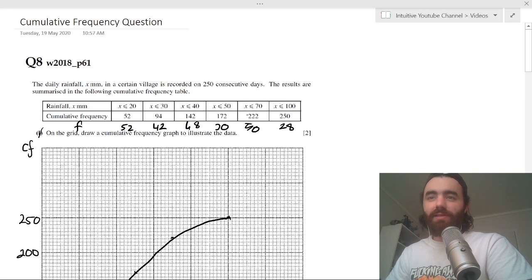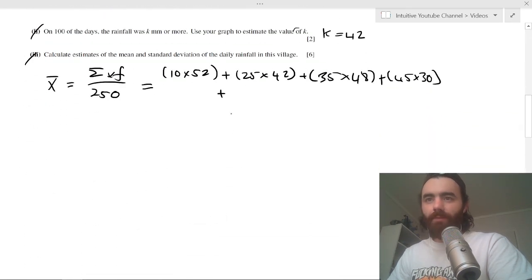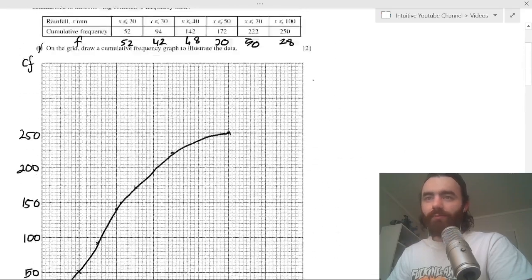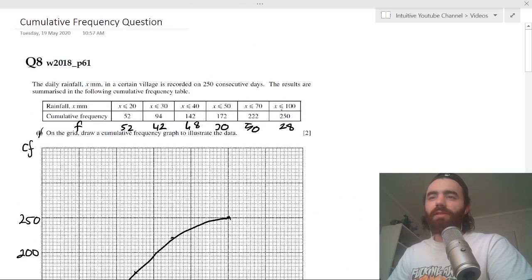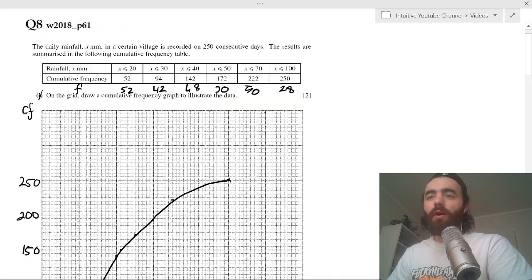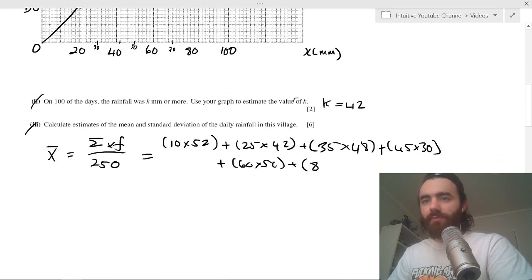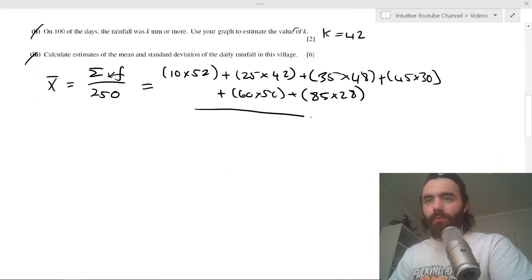Between 50 and 70 is 60 times 50, and you get the idea. Plus the final one will be between 70 and 100 - the middle is 85, so 85 times 28.